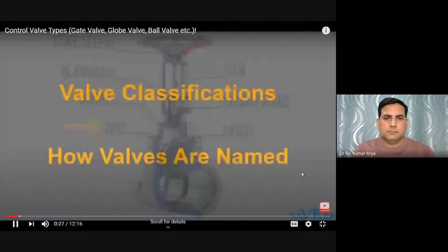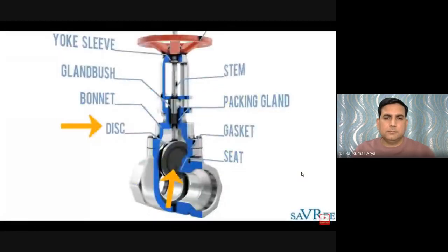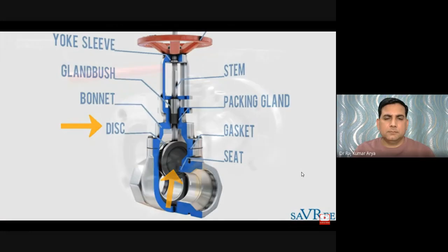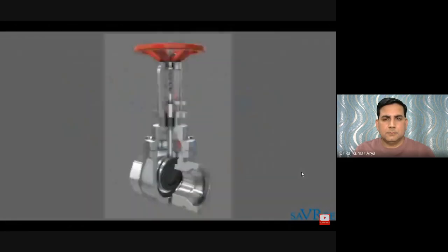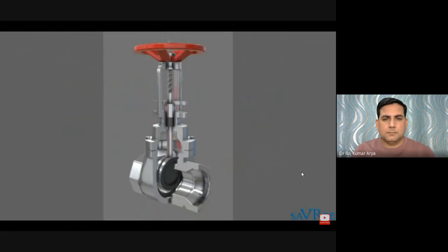Almost always, valves get their name from the type of disc used. A disc is the part of the valve used to open, close, or regulate flow through the valve — regulating flow is referred to as throttling. For example, a ball valve is named because of the ball-like shape of the disc. A butterfly valve is named because of its similar appearance to a butterfly. A gate valve is named because of its similar appearance to a gate. However, globe valves are an exception — they are named after the shape of the valve body itself.